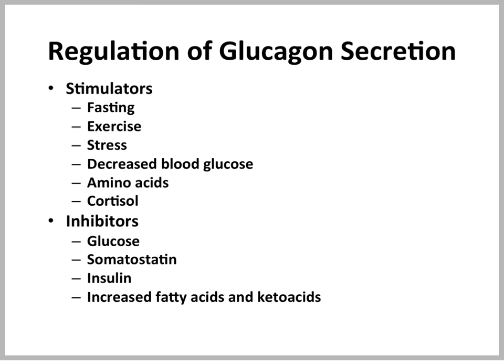Stimulators of glucagon secretion are fasting, exercise, and stress — so whenever we need an increase in blood glucose to be available quickly. Decreased blood glucose will also increase glucagon secretion because glucagon is gluconeogenic.